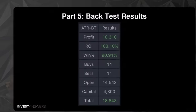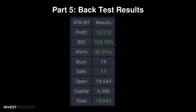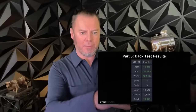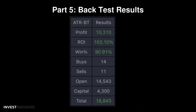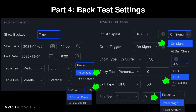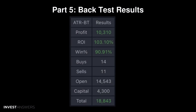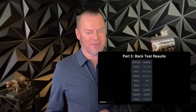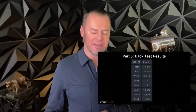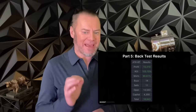The back test results show: ATR is the tool, BT is back test. You can see your profit, your ROI, your win percentage, the number of buys and sells. If it shows 14 buys and 11 sells, that means you could have three open positions — the model takes that into account. You start with $10,000 of initial capital and you'll see how much you've made after trades. Some results will blow your mind, some are average — so invest in the assets that have the most impressive results.